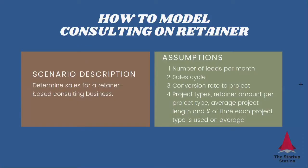Here we want to determine sales for a retainer-based consulting business. We're going to assume a certain number of leads per month, a certain sales cycle — how long it takes to convert those leads to a project — and the conversion rate. Then we need to consider project types, retainer amount per project type, average project length, and the percentage of time each project type is used on average.